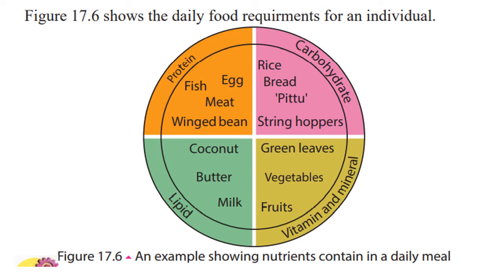Protein examples include egg, fish, meat, and beans. For carbohydrates: rice, bread, and hoppers. For lipids: coconut, butter, and milk. For vitamins and minerals: green leaves, vegetables, and fruits. After completing the activity, you can get a summary chart like this.